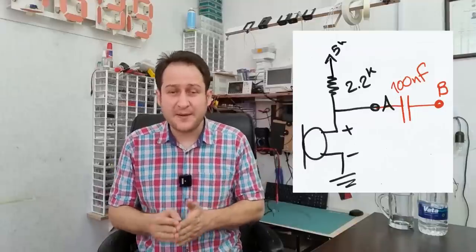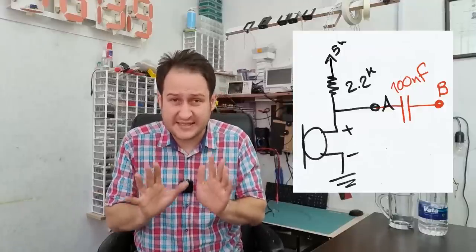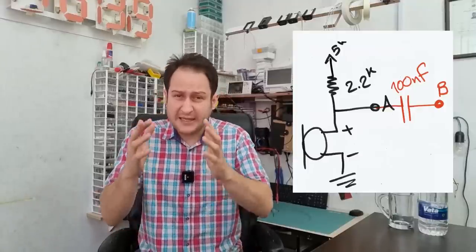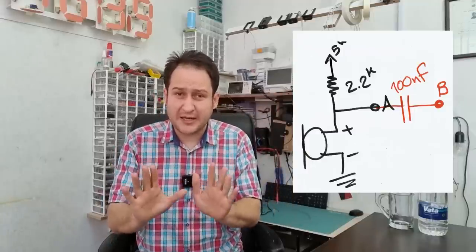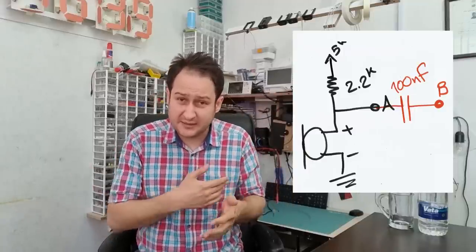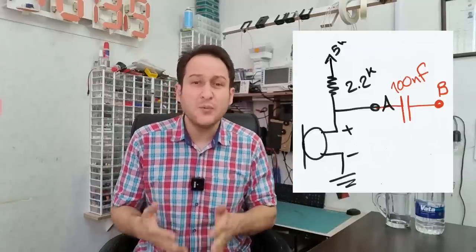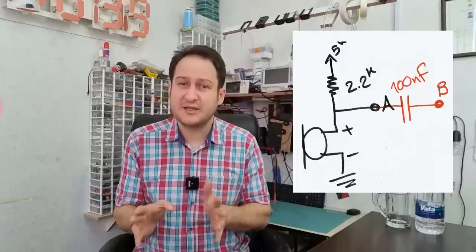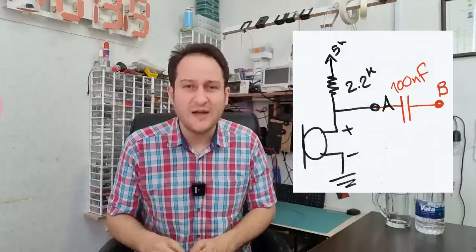The larger the capacitance, the better it passes the voice signal but the worse it blocks DC. If I decrease the value, it will improve DC blocking but worsen voice signal passing. If I increase it, it will improve signal passing but worsen DC blocking. So we have to establish a balance in choosing the right value. Here I used 100 nanofarad because I think it is optimal and balances both concerns.